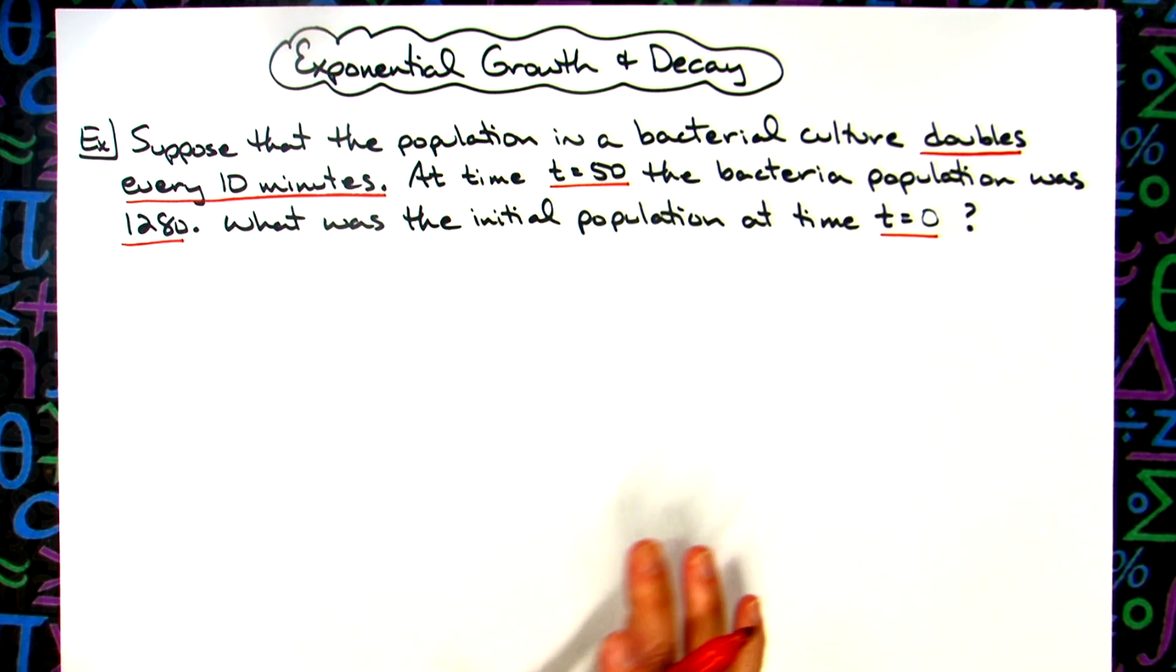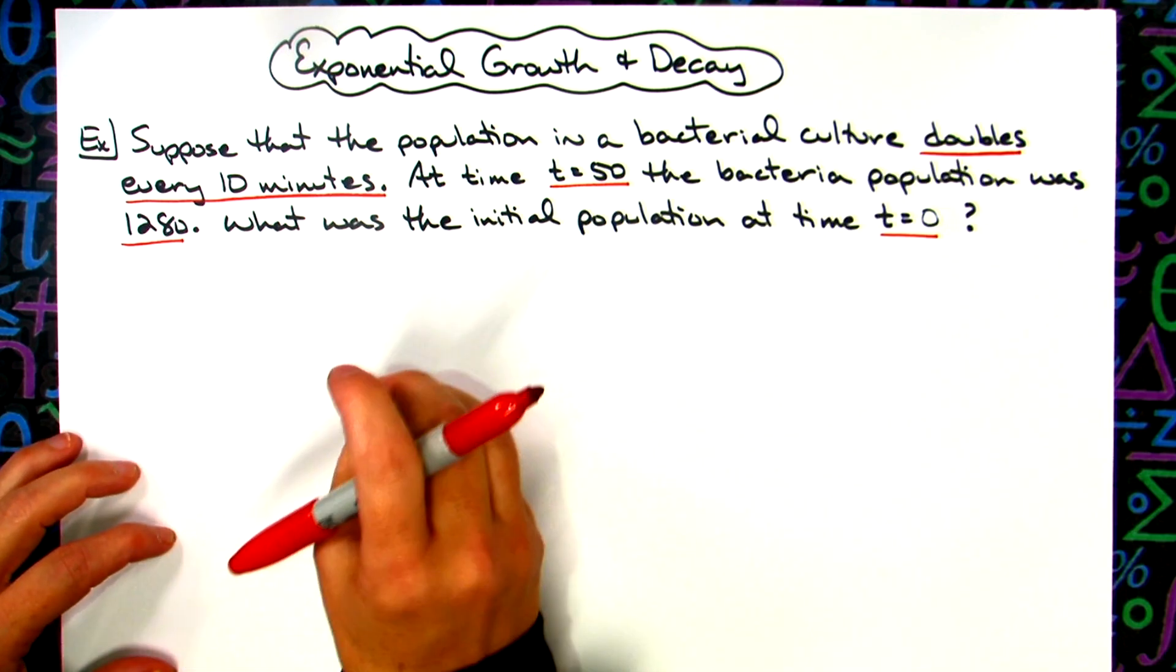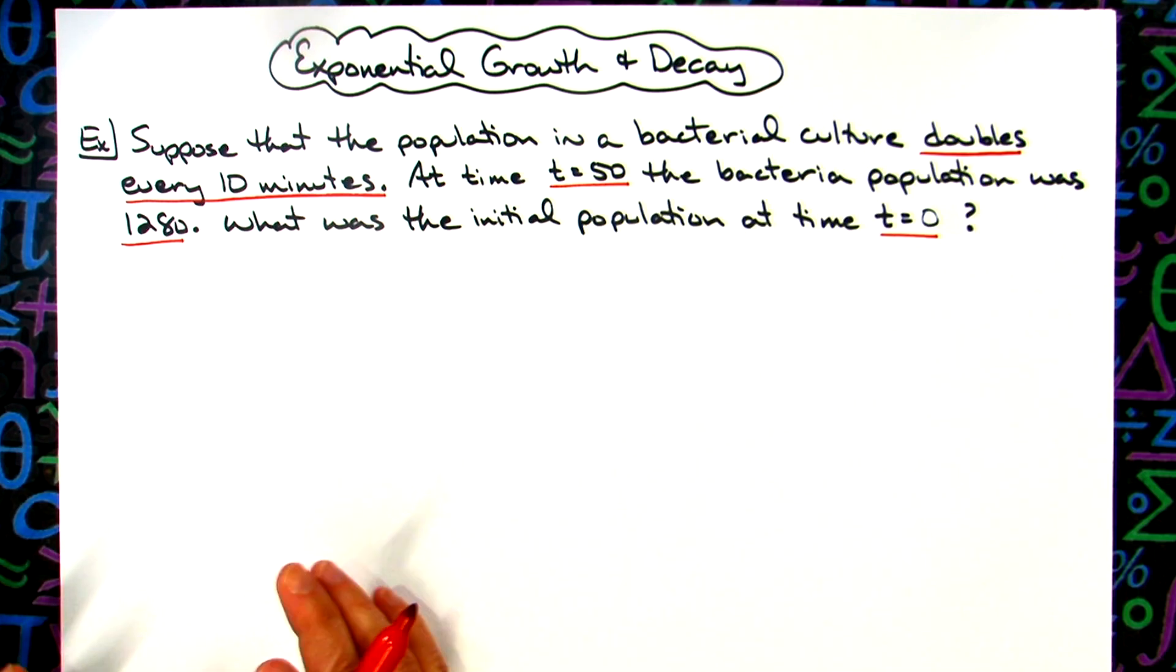The key to one of these exponential growth and decay problems is that you basically have a two-step problem every time. You have to find the rate at which this particular bacteria is growing at, and then you need to answer the question.